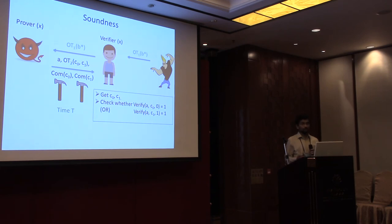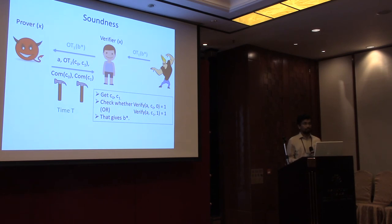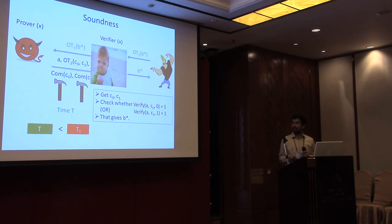Since the statement x was not in the language, it cannot be the case that both C0 and C1 simultaneously satisfy the verification. It can only be that the prover guessed what b* was — programming C0 and C1 so that only Cb is valid, since the verifier will never get the other one. So one of the commitments reveals b*, giving the verifier the ability to guess the OT bit. To arrive at a contradiction, the running time T of the verifier must be less than T1, the security parameter of the OT.